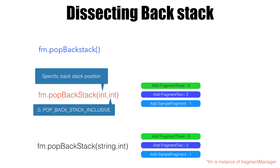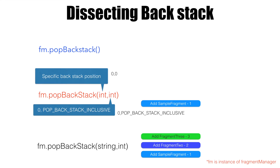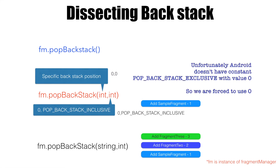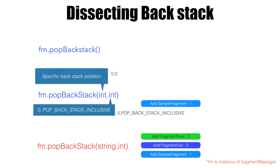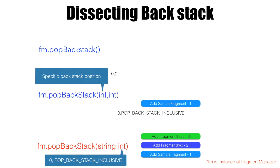Assuming you pass 0 and 0 as arguments to pop backstack, backstack entries 3 and 2 would be removed but entry 1, which is at backstack position 0, would be left untouched without being popped. However, if you pass 0 and pop backstack inclusive, all entries up to and including the position you passed would be removed — that is why the constant is called pop backstack inclusive. There is another pop backstack method taking a string and an integer as arguments; the second integer argument works the same way, taking 0 or pop backstack inclusive.